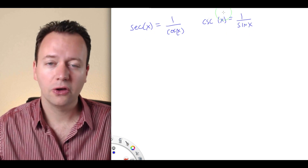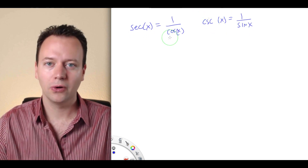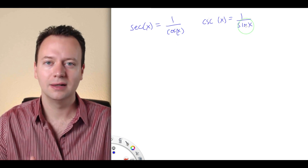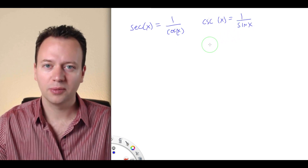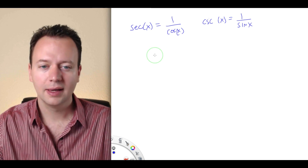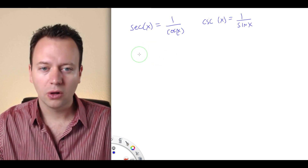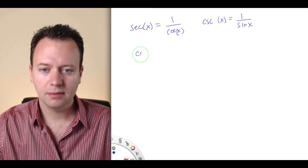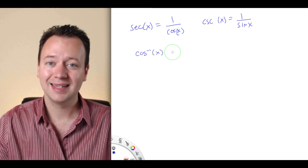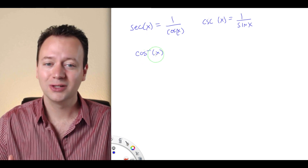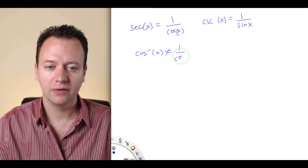Secant and cosecant are the reciprocals of cosine and sine respectively. The reason we don't use the superscript minus 1 is because that's reserved for the inverse function. Recall that cosine inverse of x is not the same as secant of x — it's not equal to 1 over cosine of x.